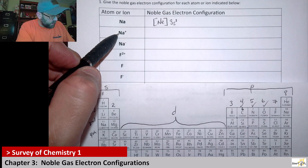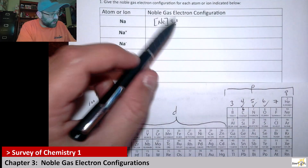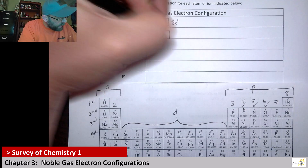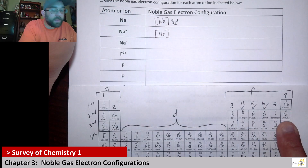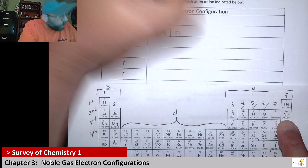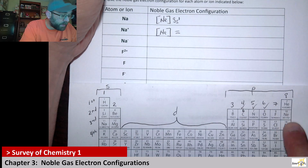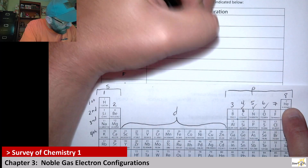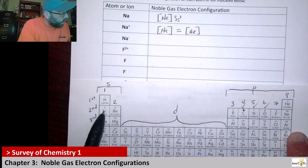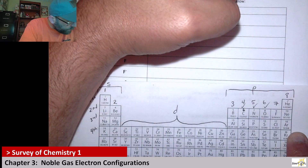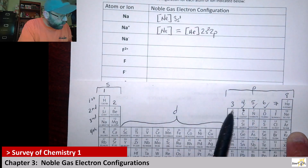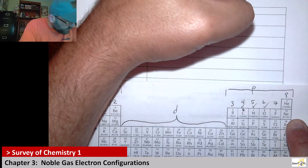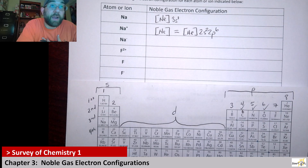Now if we look at sodium plus, it lost an electron — specifically its valence electron — so its valence shell just becomes neon. Depending on who you're asking, they may not want you to just put neon in brackets. They might ask for the noble gas configuration for neon instead. So an equivalent way is to ask: what's the noble gas before neon? It was helium. So the outer shell of neon is the second row: two S two, and then two P six. Either way is correct — it depends on preference.